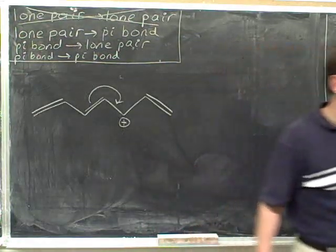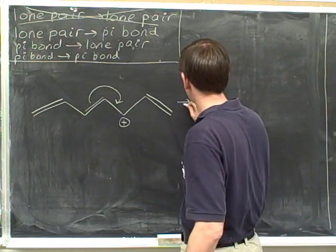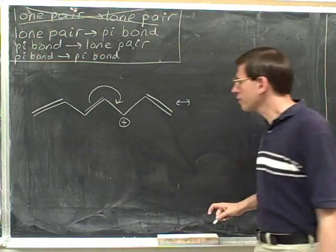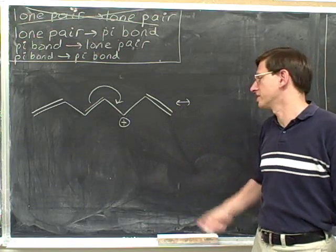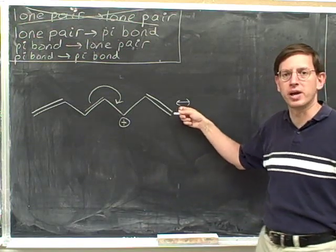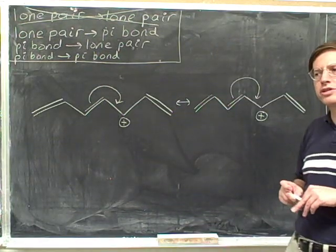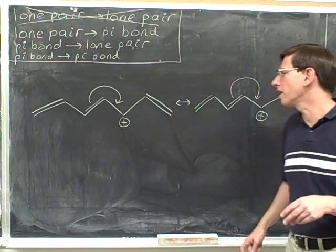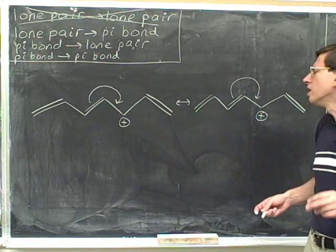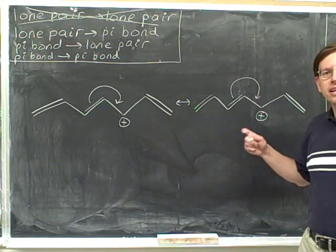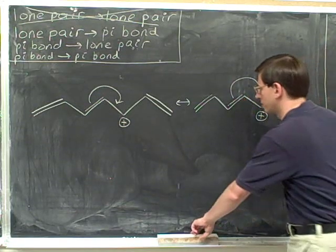Try this example. We start by redrawing the original structure. Remember to always put the double-headed resonance arrow in each of the problems. We should always be using these double-headed resonance arrows. When I redraw the original molecule, I also redraw the electron-pushing arrow — I encourage you to imitate that as well. Now, where are the electrons coming from? The tail is on this pi bond, so we erase the pi bond.